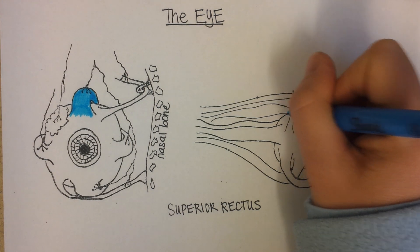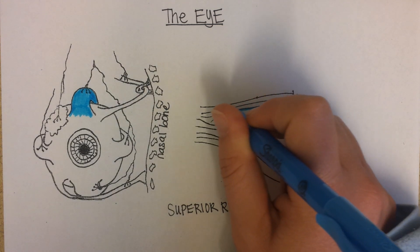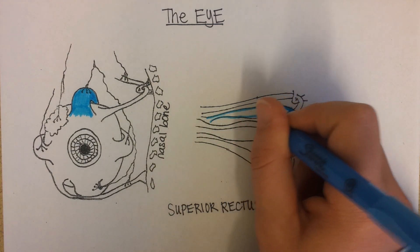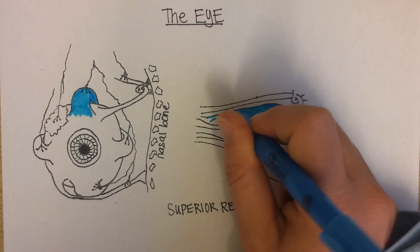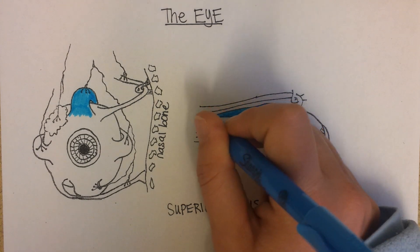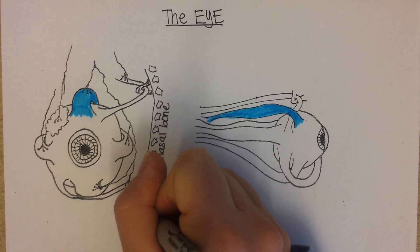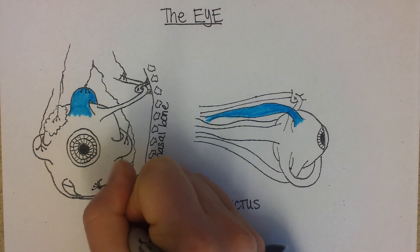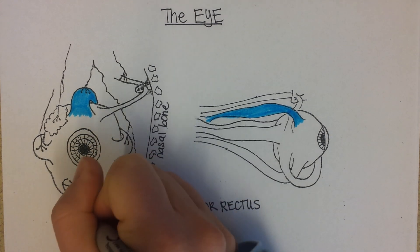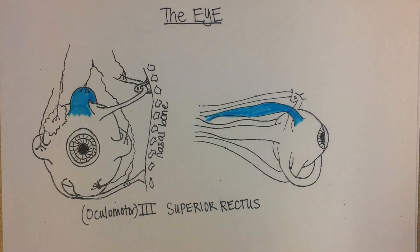Here it is from the side view. It is controlled by the third cranial nerve, called the oculomotor. The oculomotor nerve comes off of the brain from the brainstem and it moves this muscle.